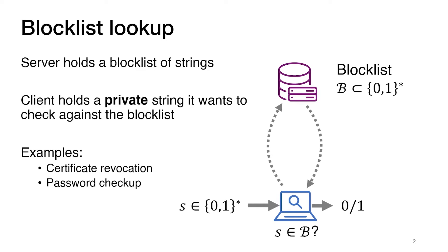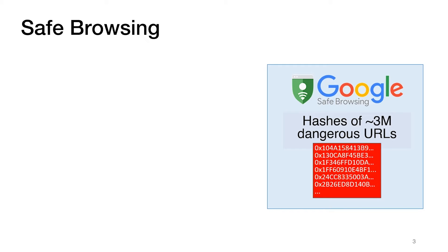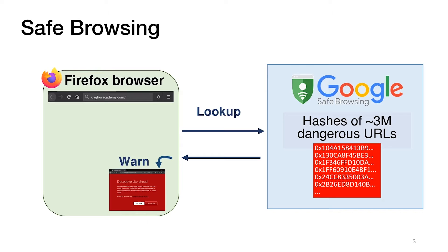An additional example of such a blocklist is the Safe Browsing system. Google maintains and constantly updates a database of dangerous URLs — URLs of websites that are used for phishing or for spreading malware. Whenever a participating browser wants to render any URL, it checks whether this URL appears on the Safe Browsing database, and if it does, the browser prevents the user from visiting the web page and shows the user a warning page.